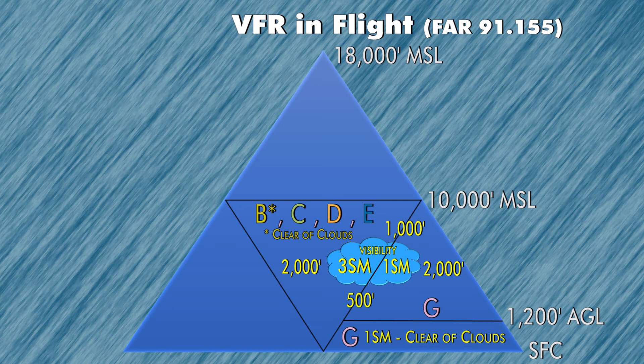On the bottom left, we have Class Golf at night. Class Golf at night has different visibilities than Class Golf in the daytime, and it just so happens to be exactly the same as what's in the middle triangle. So anytime you're in Class Golf at night below 10,000 feet MSL, you'll need three miles of visibility, you have to be 1,000 feet above, 500 feet below, and 2,000 feet horizontally away from clouds.